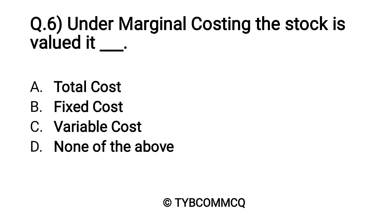Question number six: Under marginal costing, the stock is valued at dash dash. Option A: total cost, Option B: fixed cost, Option C: variable cost, and Option D: none of the above. Yes, Option C — variable cost — is the correct answer.